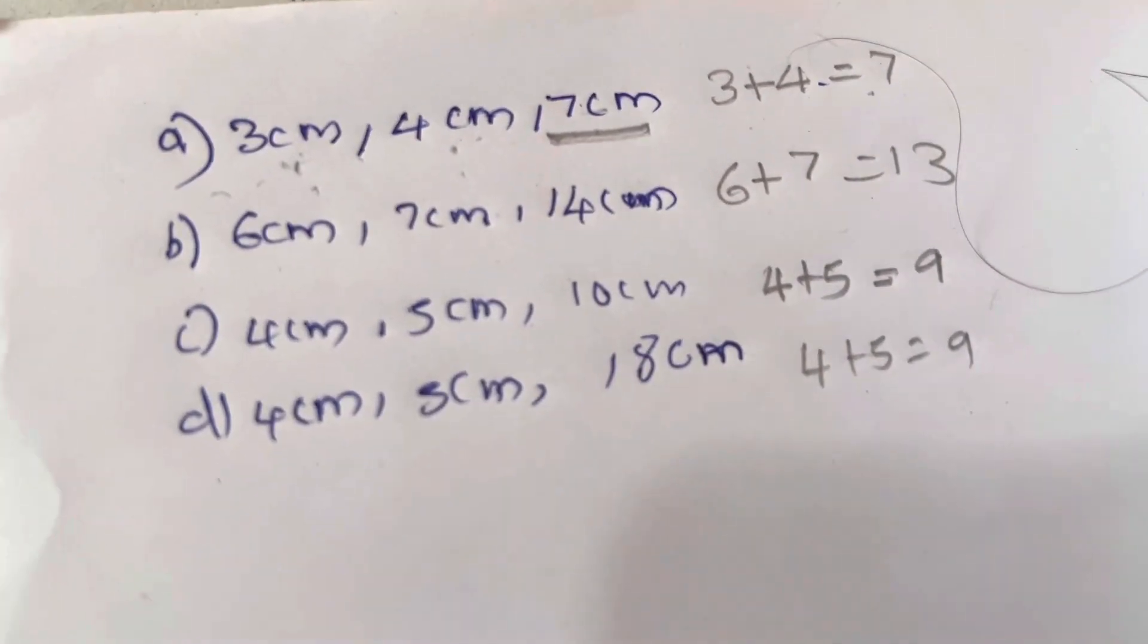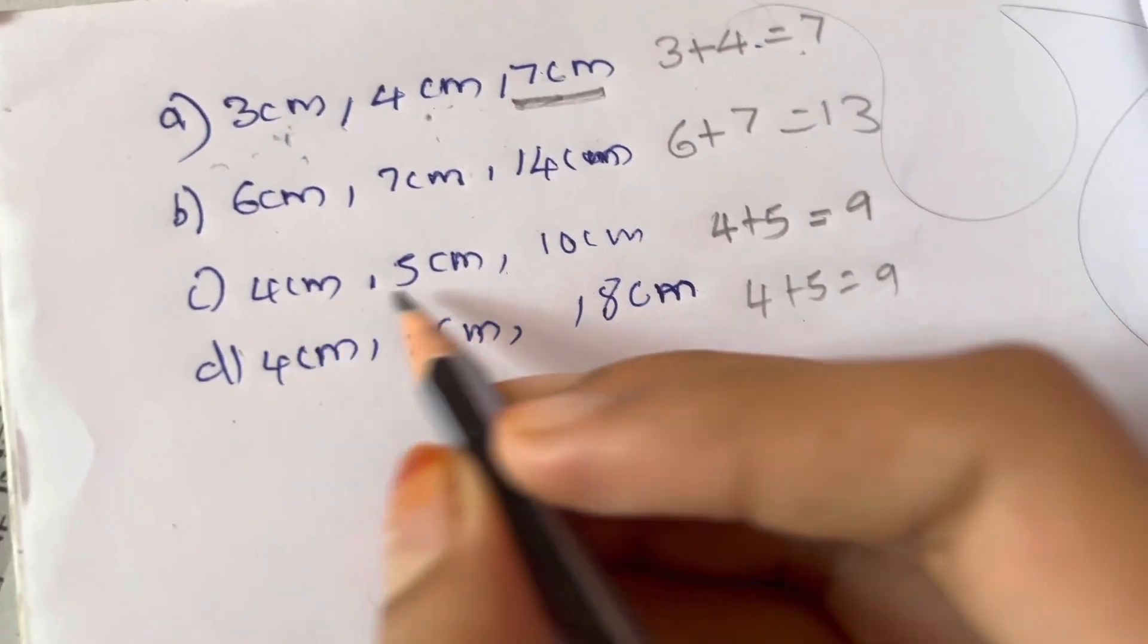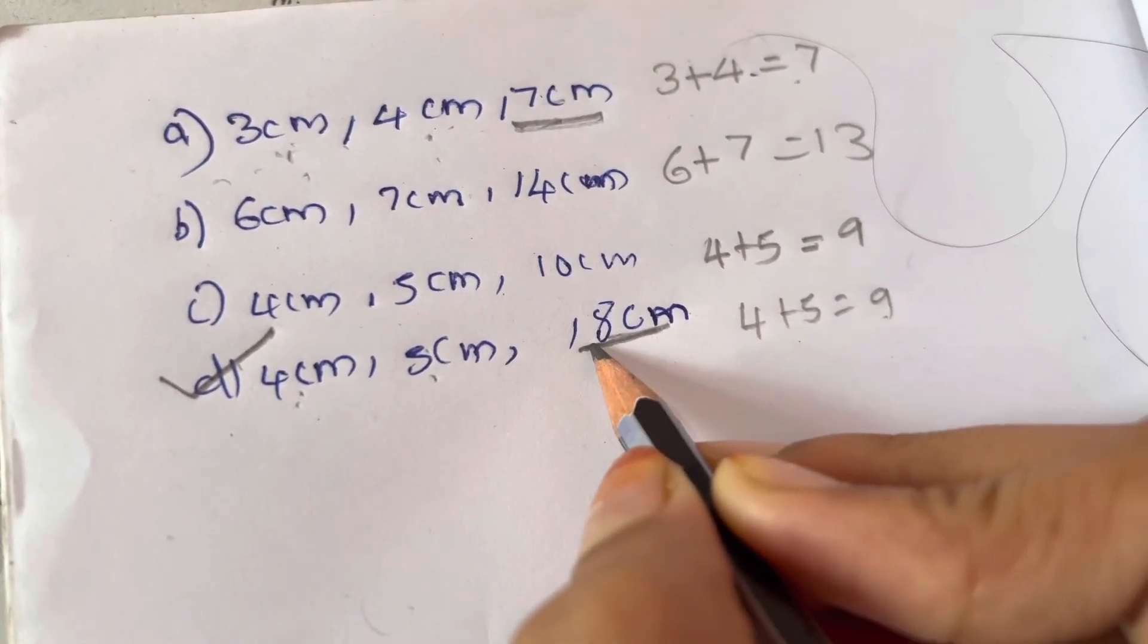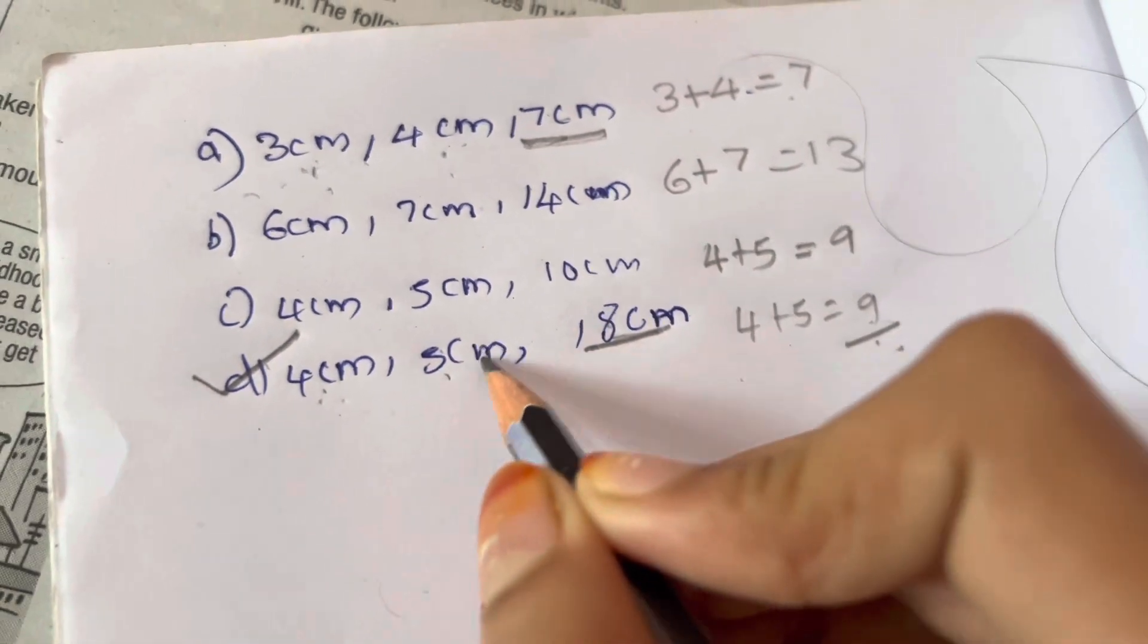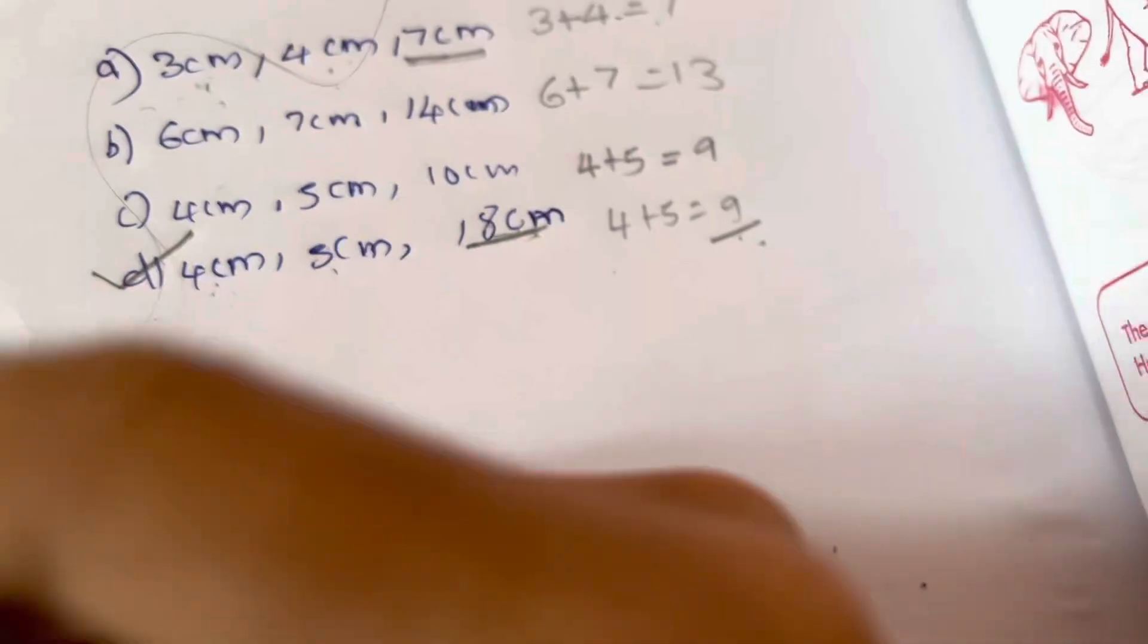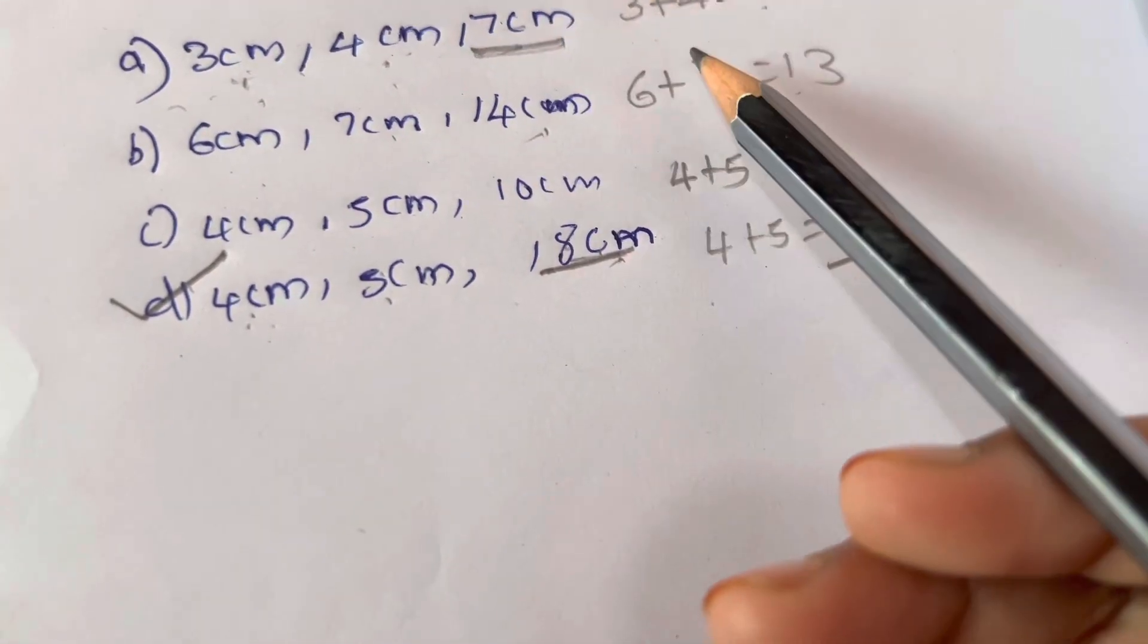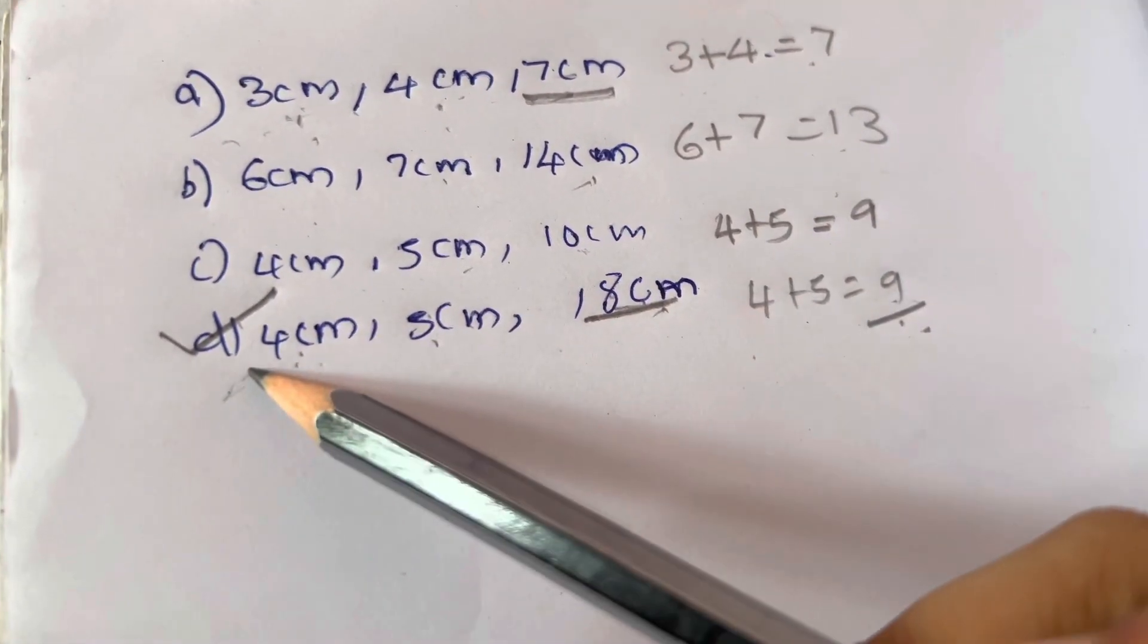For option D, it is 4 plus 5 equals 9. Here 8 is less than 9, so this is valid. 4 cm, 5 cm, 8 cm - this is the triangle. For option B, 6 plus 7 is 13, but we need 14, so this doesn't work. Option C: 4 plus 5 is 9, but we need 10. So D is the answer.